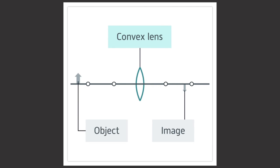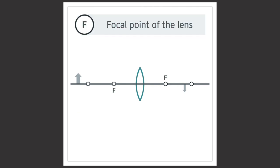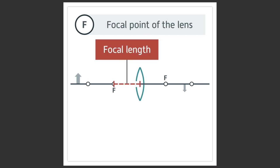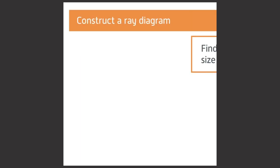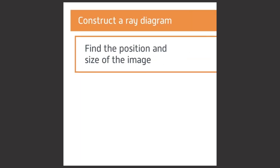F is the focal point of the lens. The distance from the focal point to the center of the lens is the focal length. C is the center of curvature, at a distance of twice the focal length. You need to be able to construct a ray diagram to find the position and size of the image.